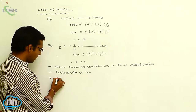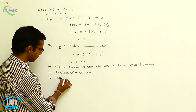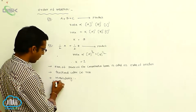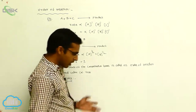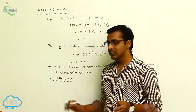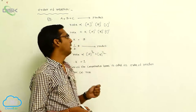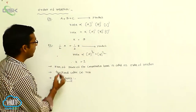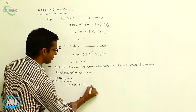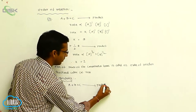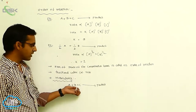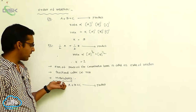Now we discuss another concept: molecularity. Molecularity means the number of molecules involved in a chemical reaction is called molecularity. For example, A plus B plus C gives product — in this reaction, the number of reactants is three, so the molecularity value is three.